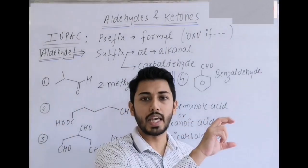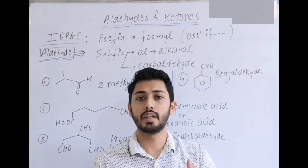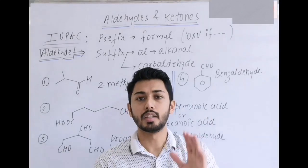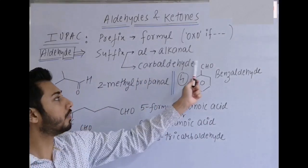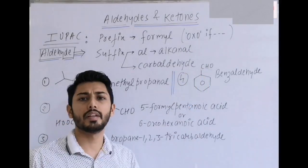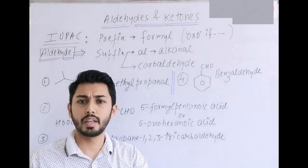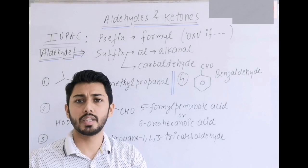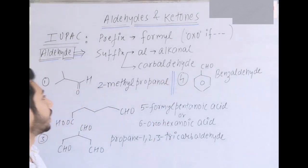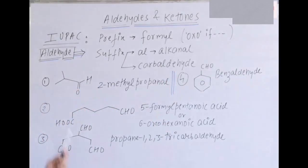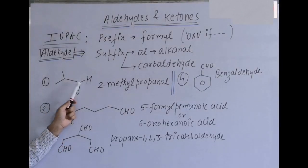When the aldehyde carbon is counted, we use the suffix 'alkanal'. In the case of rings where the CHO group is attached to a ring structure, the name is 'carbaldehyde' — for example, cyclopentane carbaldehyde or cyclohexane carbaldehyde. These are the two suffixes for aldehyde.